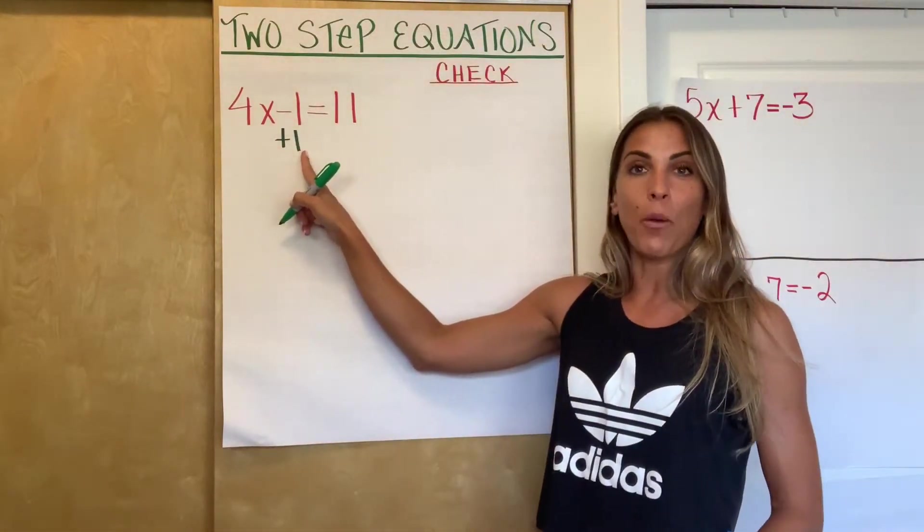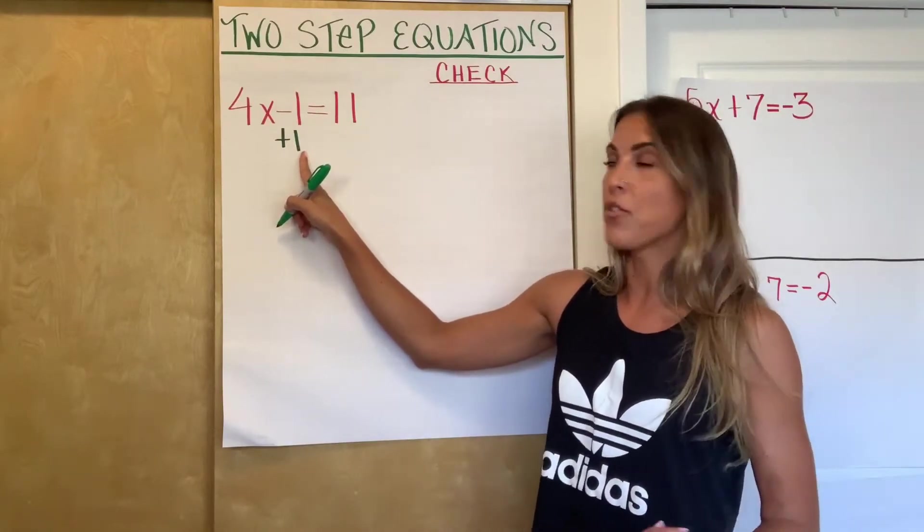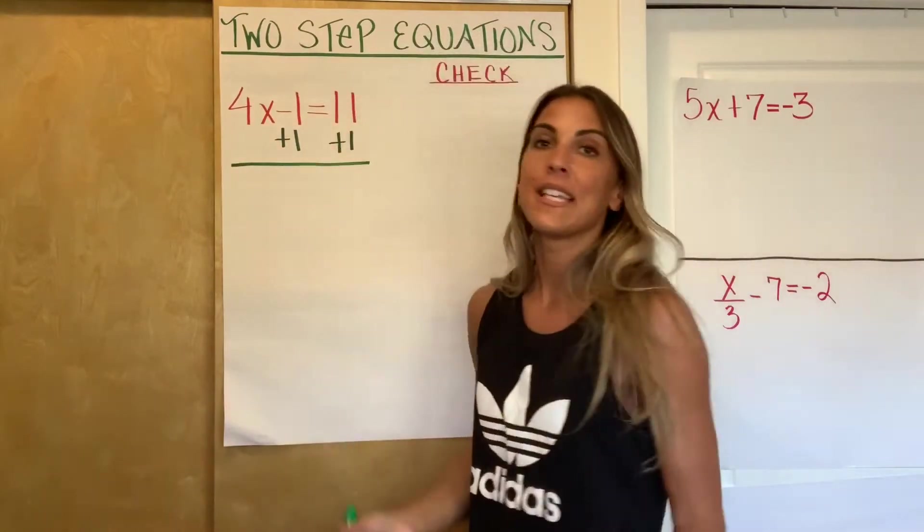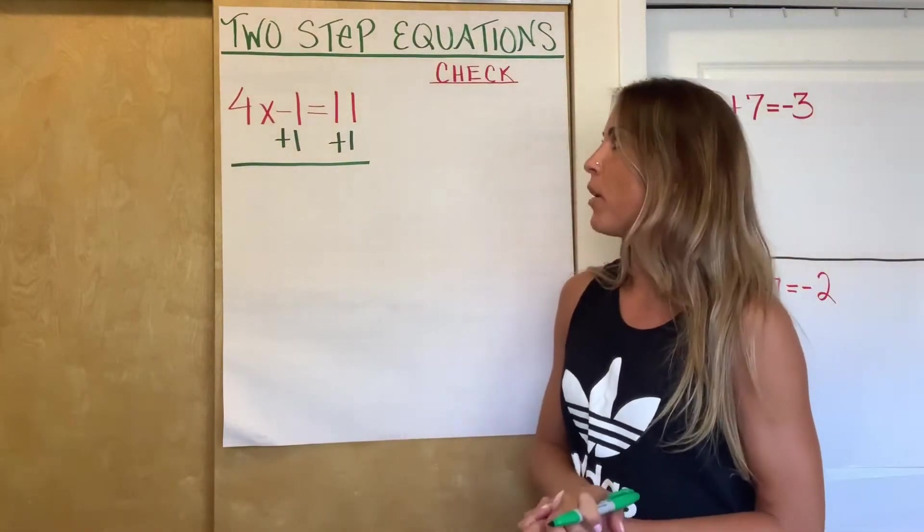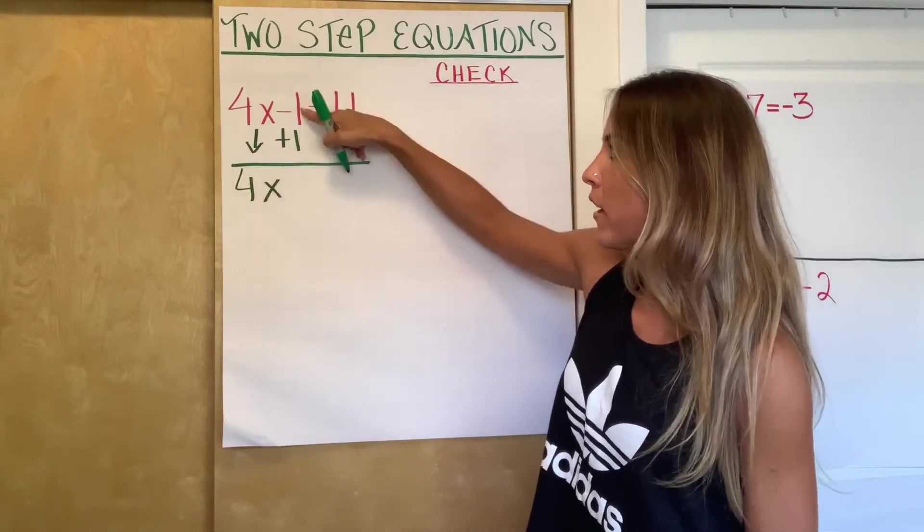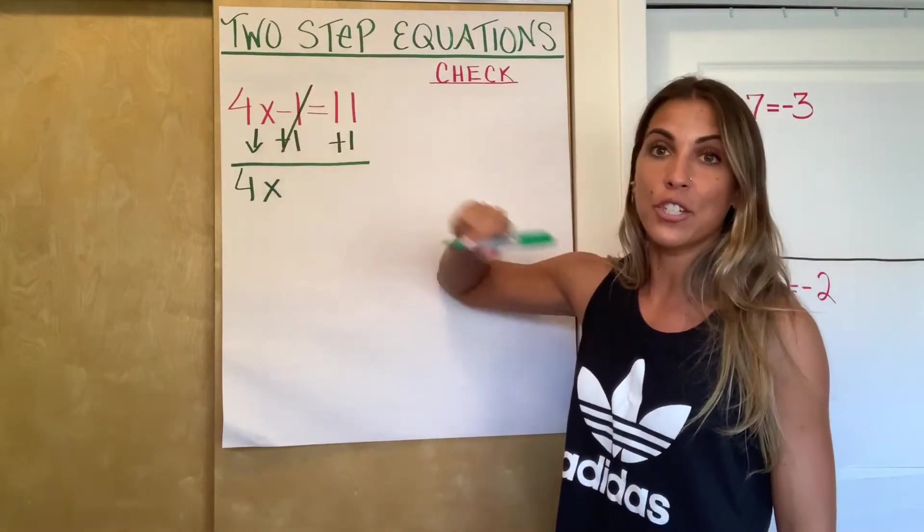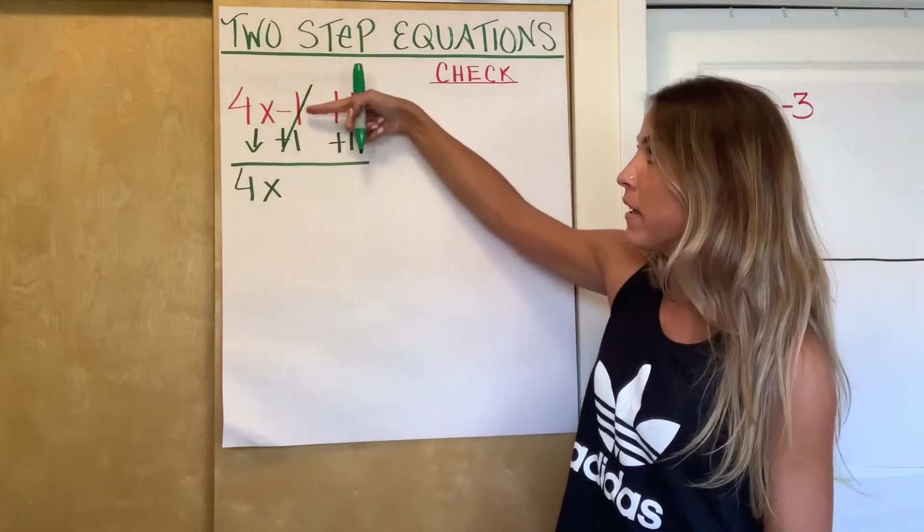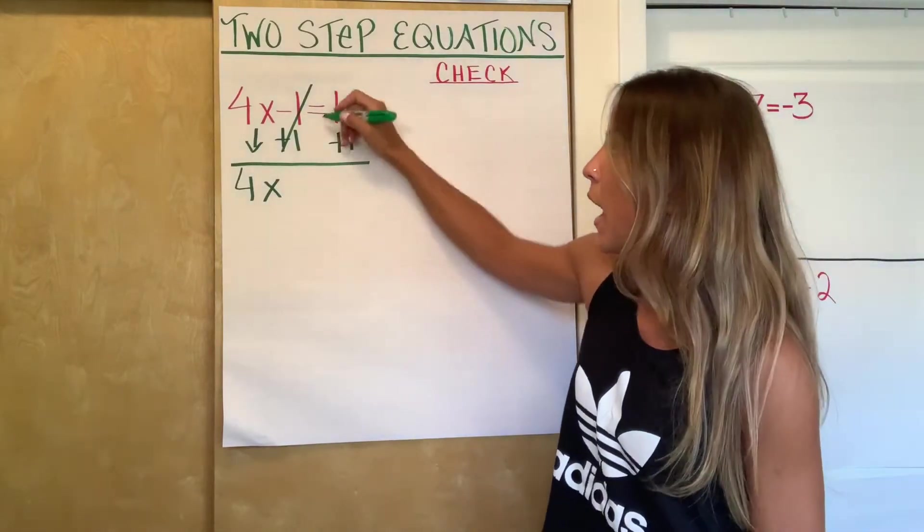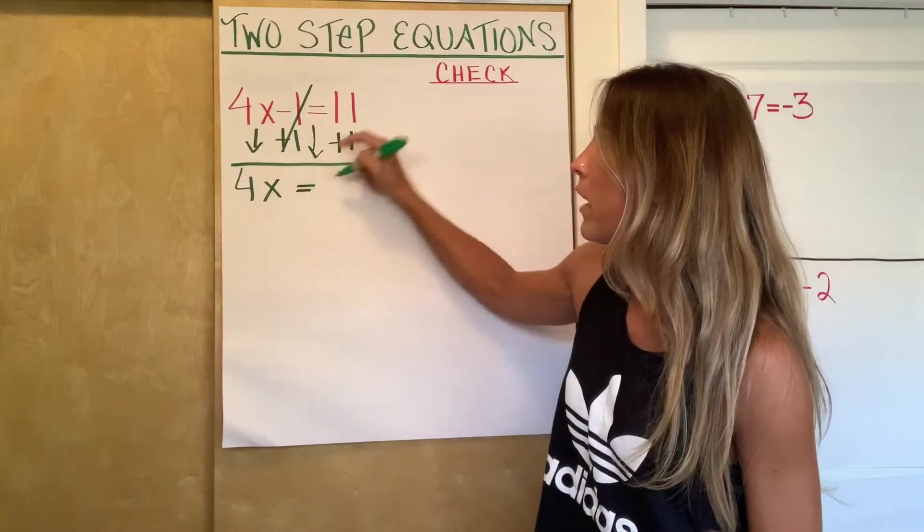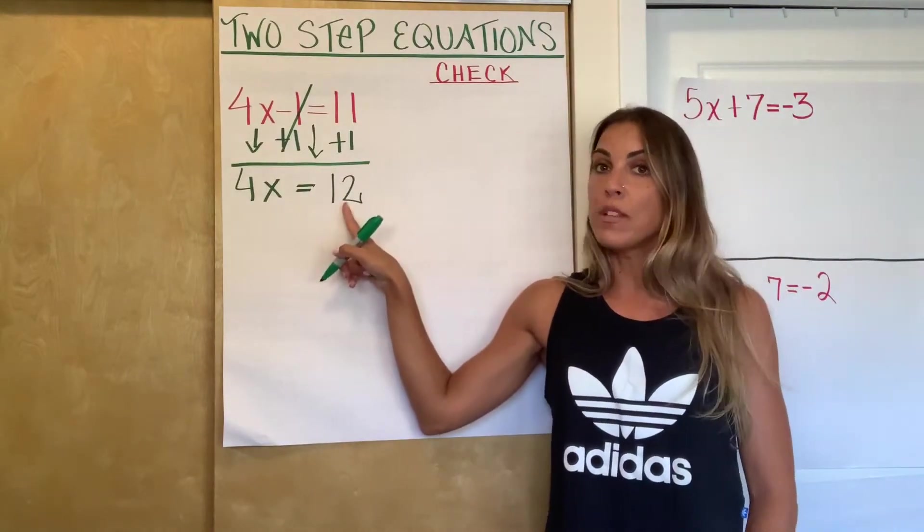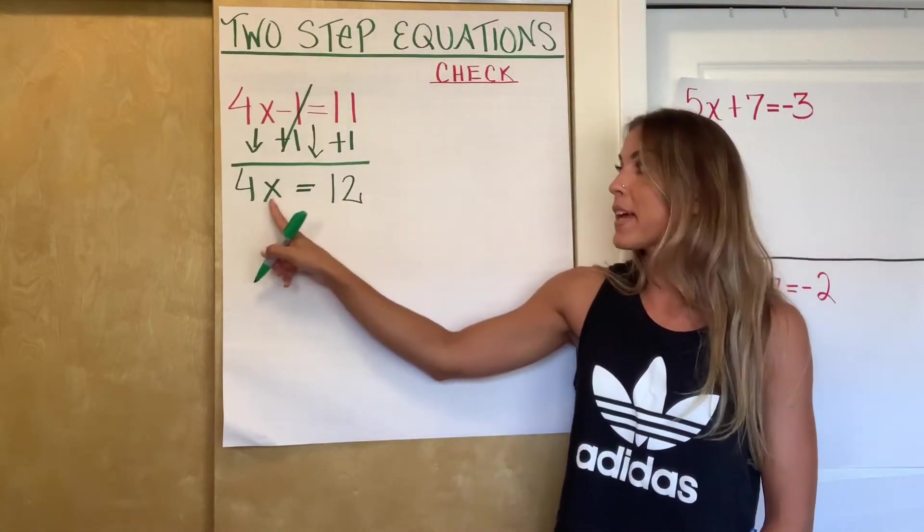And then that last important bullet point was whatever we do to one side, we have to do to the other side. So if I'm going to do plus 1 here, I better also do plus 1 to the 11 to keep that equation balanced, to keep that statement of equality true. So now the 4x is going to come down. The negative 1 and the positive 1 will cancel out. And just as a reminder of why, it's because negative 1 plus 1 is 0, but 0 plus 4x is just 4x. So there's my 4x. My equal sign will come down and 11 plus 1 is 12. And now we have just the one-step equation. Now the only thing I have to get rid of in order to get that x by itself is the 4.